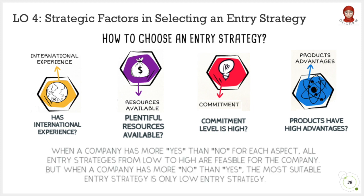In short, when a company has more 'yes' answers than 'no' answers for each of these aspects, all entry strategies from low to high are feasible. But when a company has more 'no' answers than 'yes' answers for these four aspects, the most suitable entry strategy is only the low-level entry strategy.